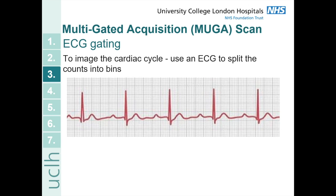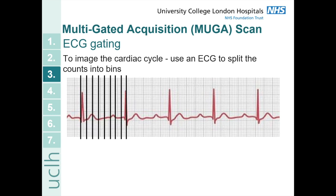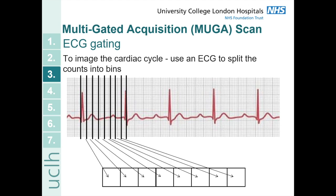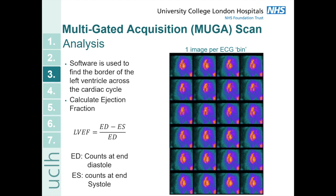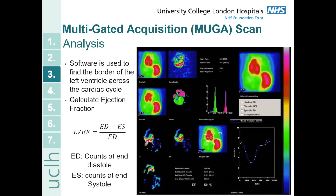ECG-gating is used so that we can image across the cardiac cycle. We use the ECG signal to split the counts that we're recording into separate bins, dividing the cardiac cycle into bins. Counts recorded within each time frame of the cardiac cycle are assigned to the correct bins, and for the next cardiac cycle the same bins are assigned. This means we can accumulate counts within the bins to produce an image across the 10 minutes, averaging across the 10 minutes for each of those bins. To analyse the MUGA scan you use software to find the border of the left ventricle across the cardiac cycle and calculate the ejection fraction using counts at end diastole and systole.